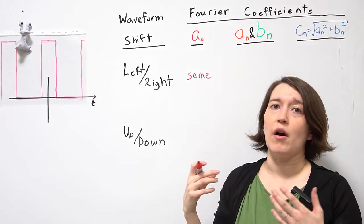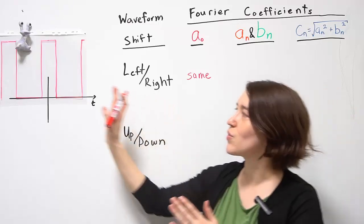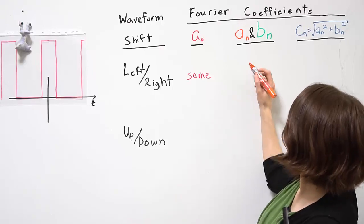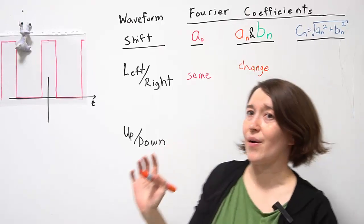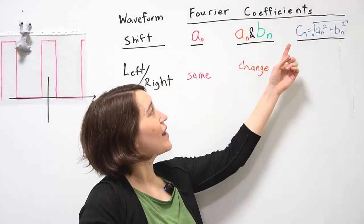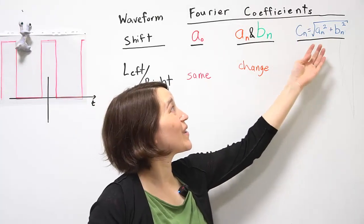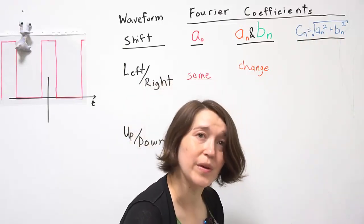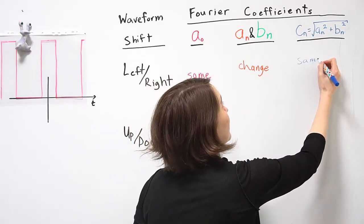aN and bN are coefficients for the sine and the cosine components. Because we shift over time, those would change. However, it turns out that this value will actually stay the same. Because it is broken up into these two components, it will be the same value even if you shift left and right.